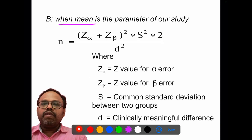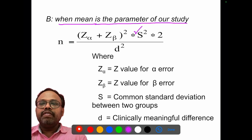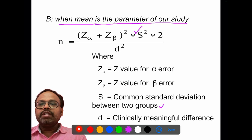The formula for comparison of sample size when mean is the parameter: PQ is replaced with the common standard deviation between two groups, and D is the clinically meaningful difference.